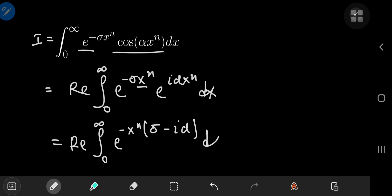So we can write the integral as the real part of the integral from 0 to infinity of e to the negative sigma x to the n times e to the i alpha x to the n dx. And once you multiply the two exponentials in the integrand, you can add up the exponents. So you have e to the... Now I'm going to factor out a negative x to the n term in the exponent, and that leaves me with sigma minus i times alpha. And we're integrating with respect to x, of course.